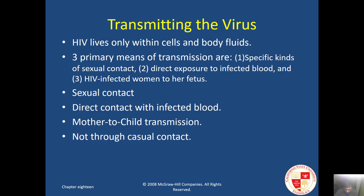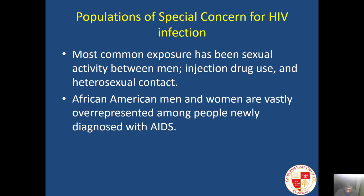Common routes of transmission of the HIV virus include sexual contact, direct contact with infected blood, and mother-to-child transmission. It is not contracted through casual contact. These are the typical population groups of special concern for HIV transmission, but by no means are you off the hook if you don't fall into these categories — men, women, children, heterosexual, homosexual, and all ethnicities have been impacted by HIV.